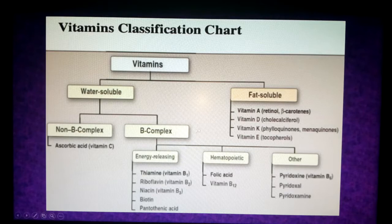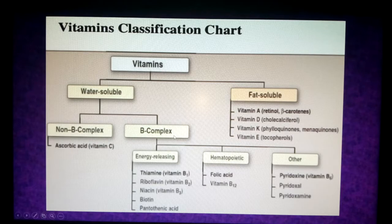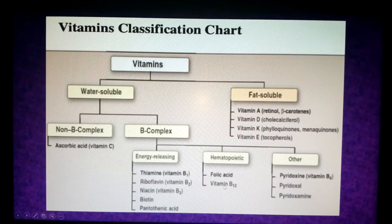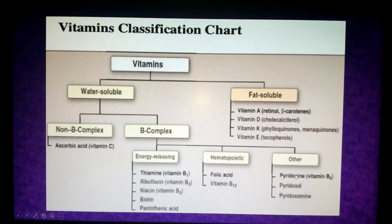Here is a more detailed and beneficial classification. Vitamins are fat-soluble and water-soluble. Water-soluble B complex is further classified into hematopoietic vitamins — folic acid and vitamin B12, which stimulate the blood to produce more erythrocytes (RBCs) — and energy-releasing vitamins: B1, B2, B3, biotin, and pantothenic acid. Others include pyridoxine (B6).